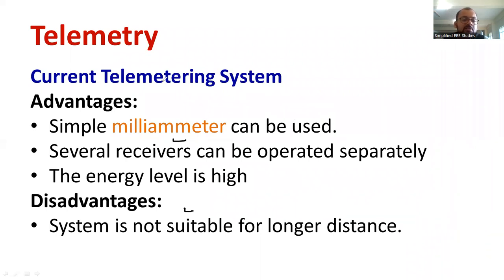There are advantages in case of current telemetry system. The milliammeter is quite simple and inexpensive. Several receivers can be operated separately, unlike voltage telemetry system. That is one of the advantages of current telemetry system compared to voltage telemetry system. Then the energy level is too high. So these are the major advantages.